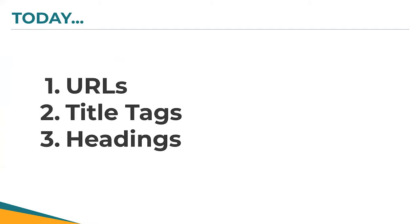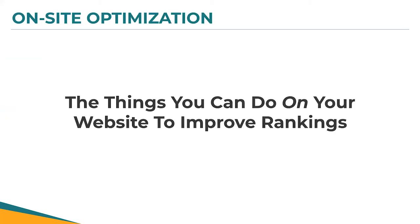Today we're going to talk about these three things that really make or break the SEO on your website: your URLs, your titles — more commonly known in the SEO world as title tags — and the headings on your pages. This is what's referred to as on-site optimization or on-page optimization. There's also off-site SEO, which includes things like getting listed on business directories, getting mentioned on another website, or getting reviews on your Google My Business listing — that's off-page optimization that still impacts your search presence.